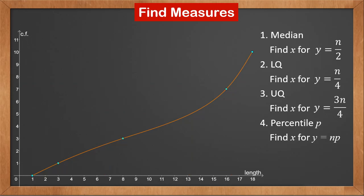We can also find percentile. Ninety percentile means ninety percent of values are smaller than this value. Ninety percent of ten is nine. So we need to find the x coordinate on the curve when y is nine. We can see that the ninety percentile is 17.3.